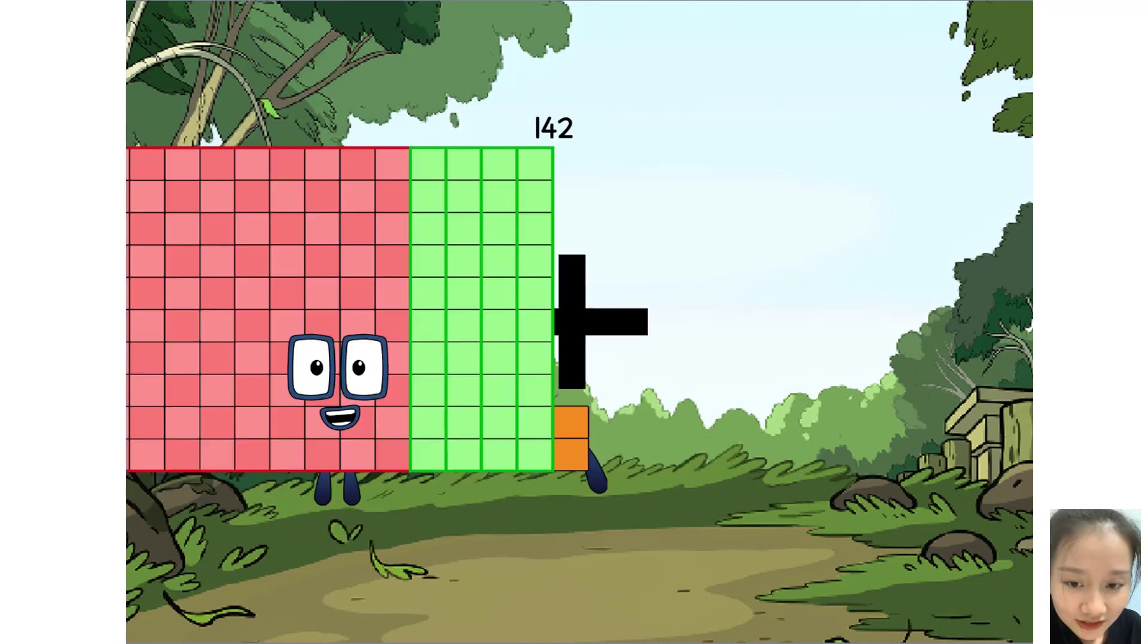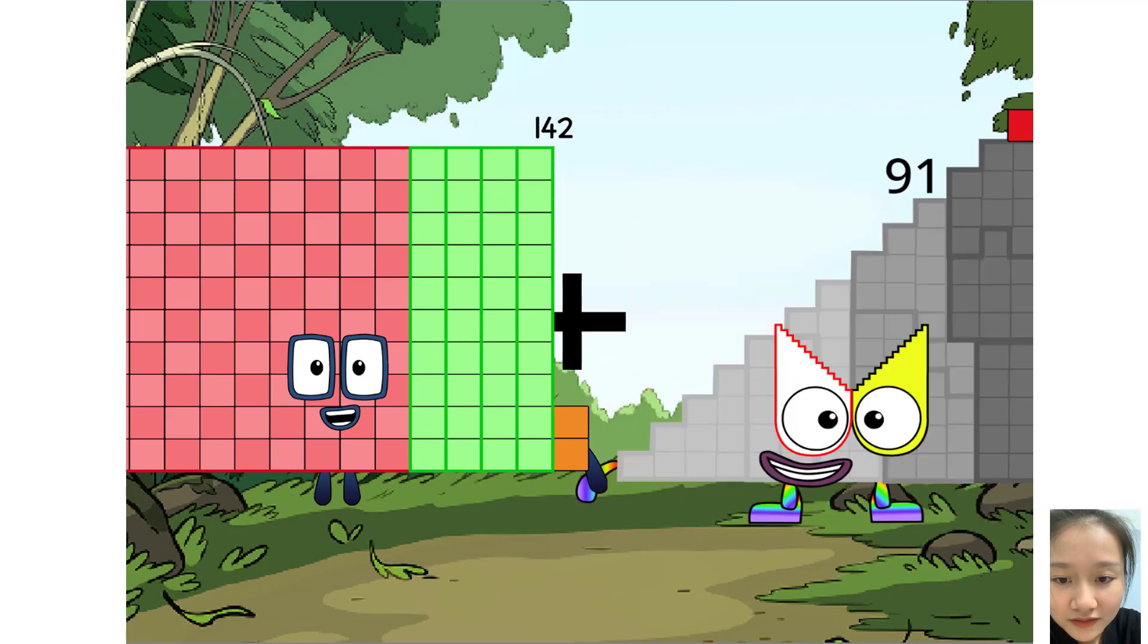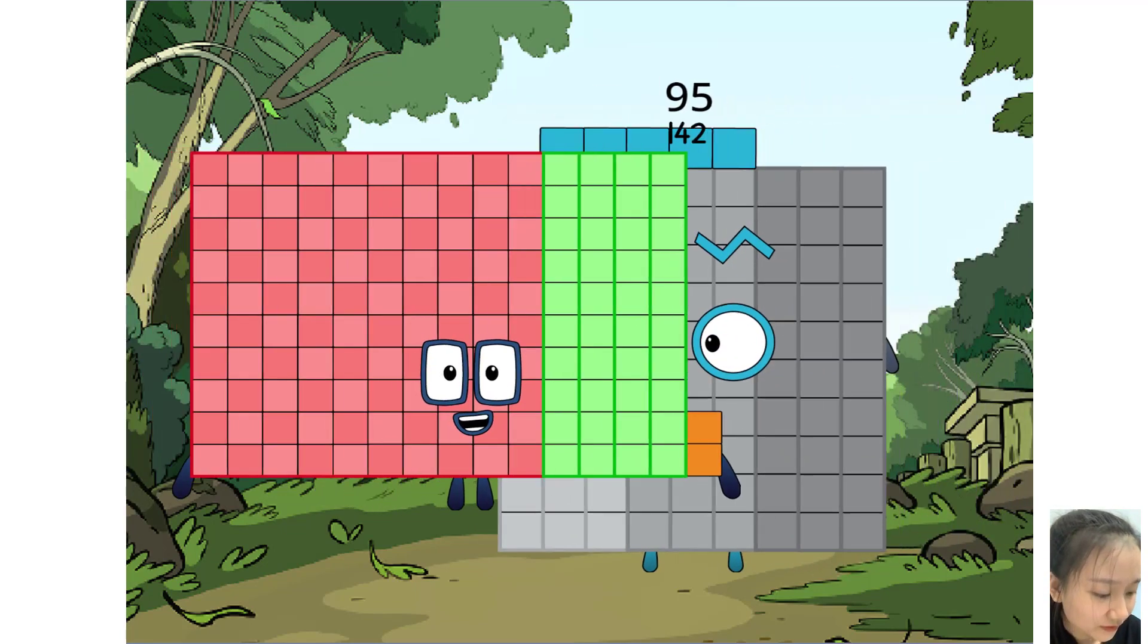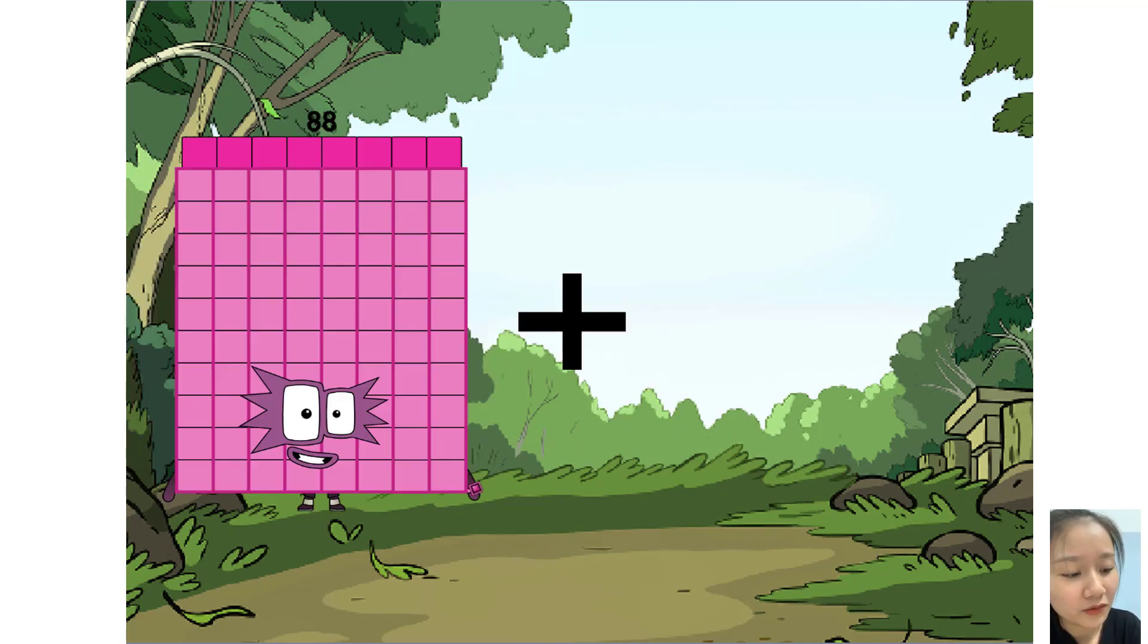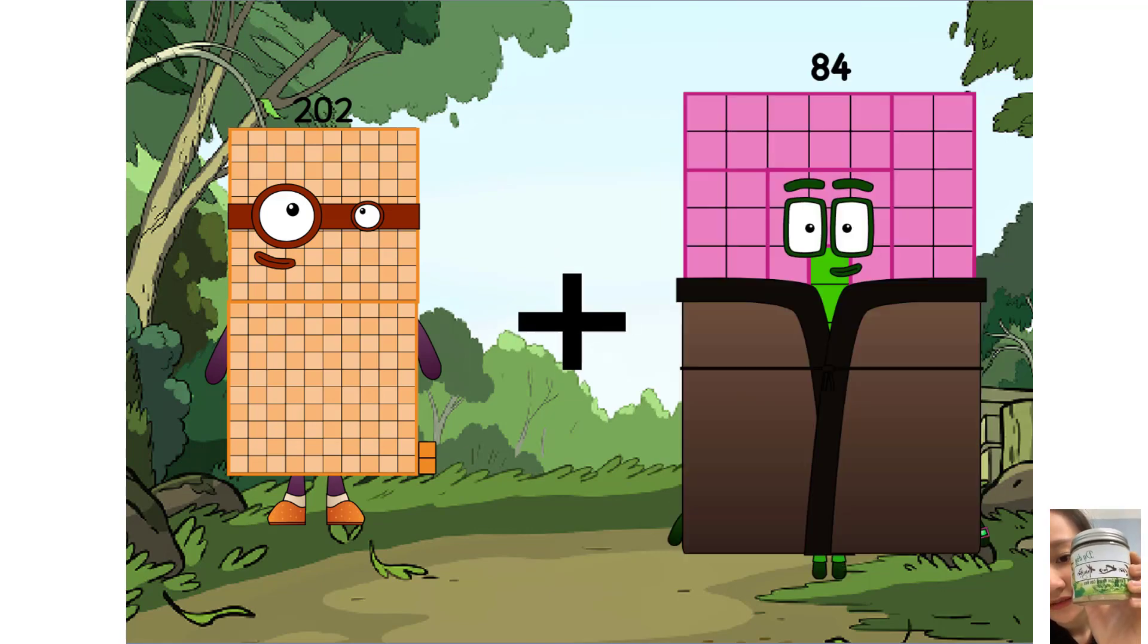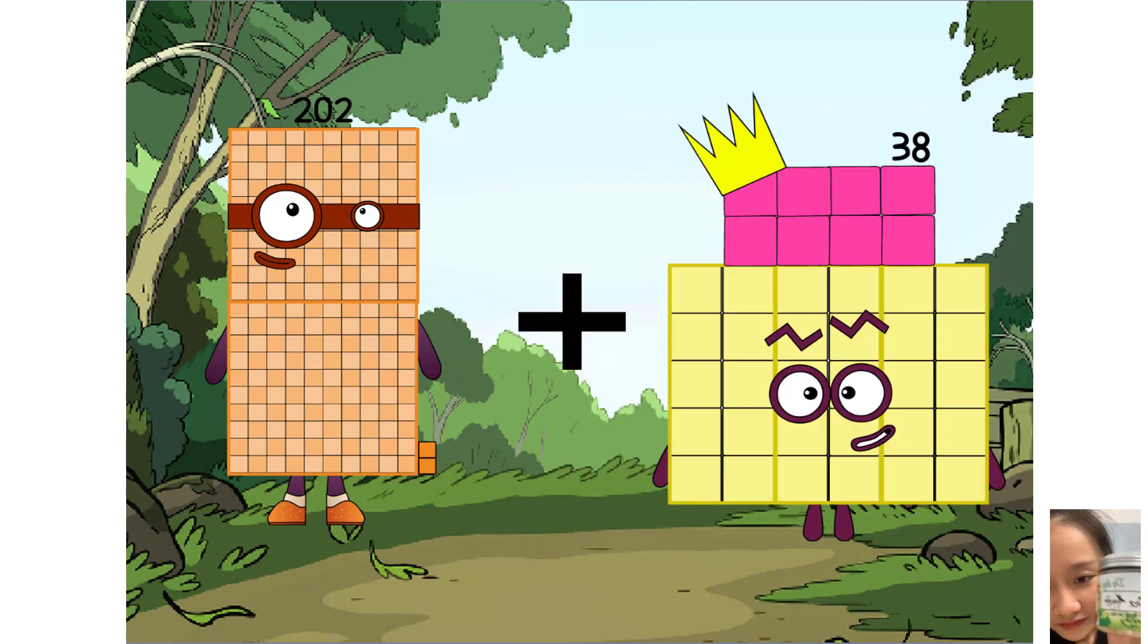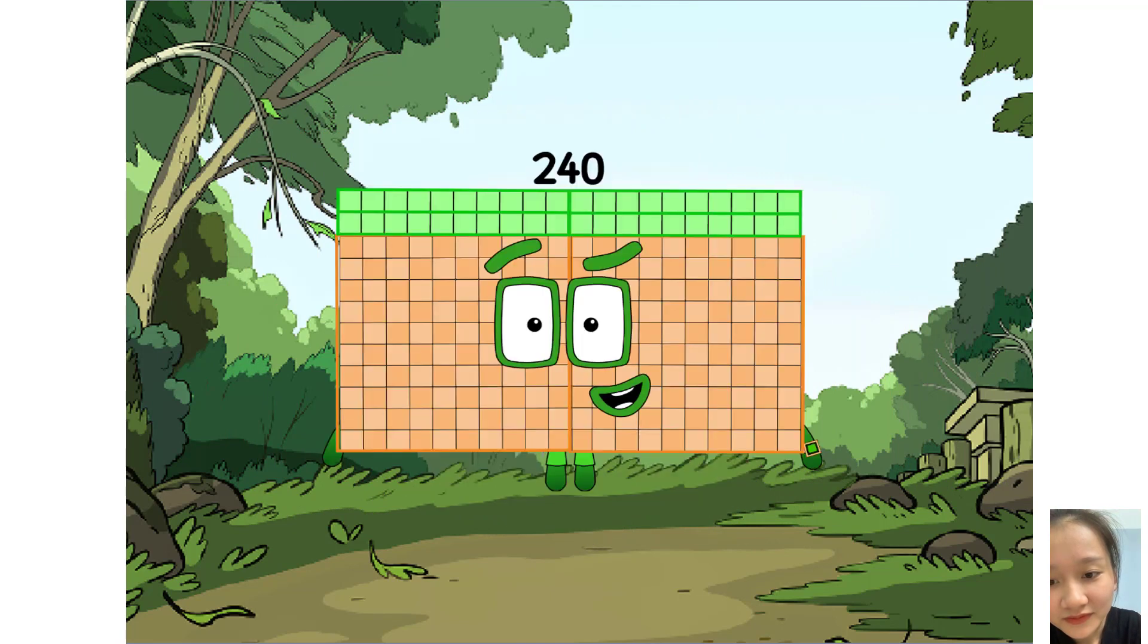142 plus 95 equals 237. 202 plus 38 equals 240.